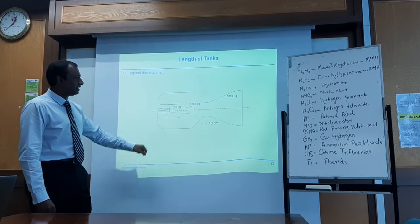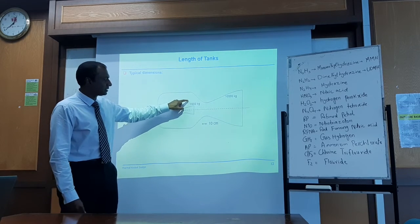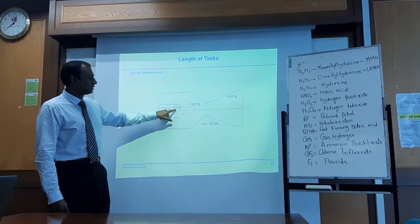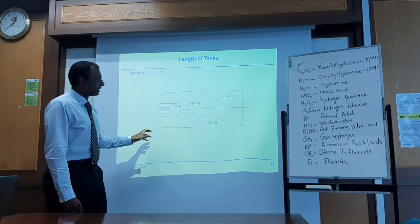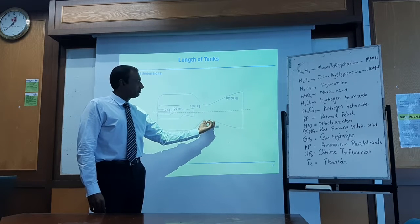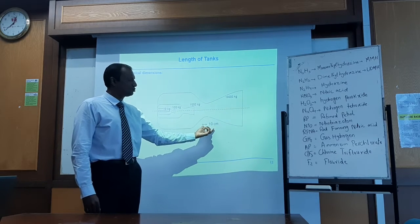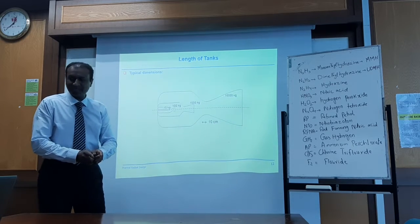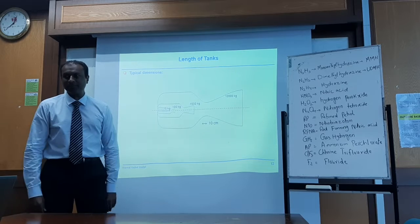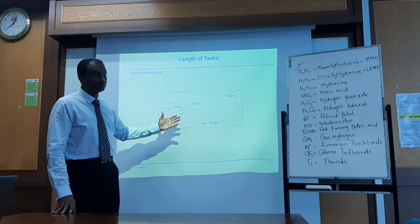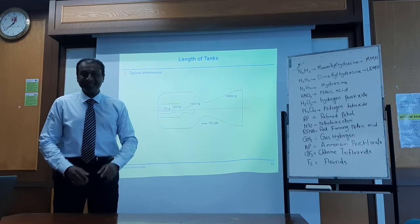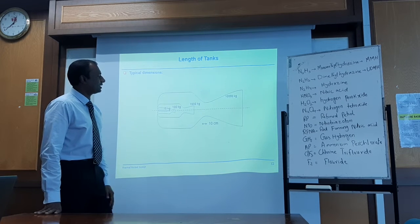For a bigger engine, say 10,000 kg thrust, you can see typical designs. For 10,000 kilograms of thrust, the throat is about 10 centimeters — which is actually quite large. For 1,000 kg, it reduces to about 1 centimeter, which is very small. For 10 kg thrust, the throat is extremely thin. These are the typical dimensions for different engine scales.